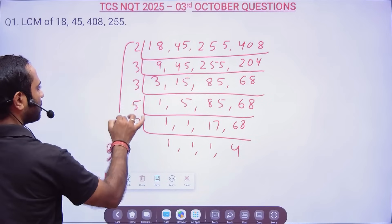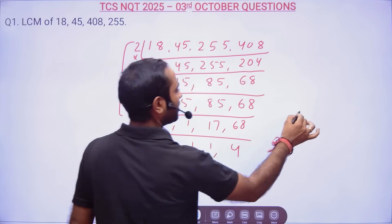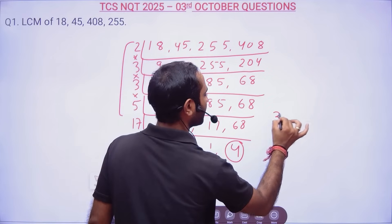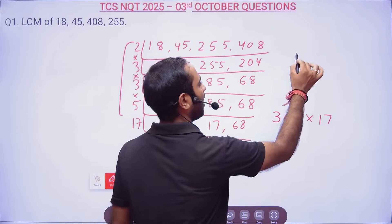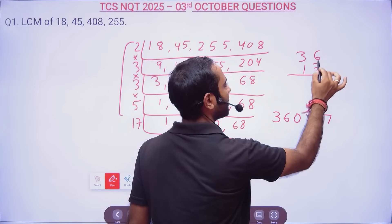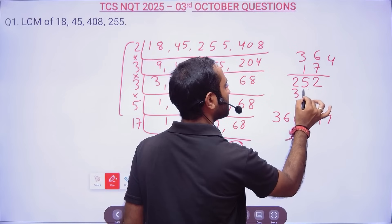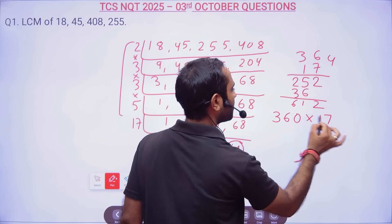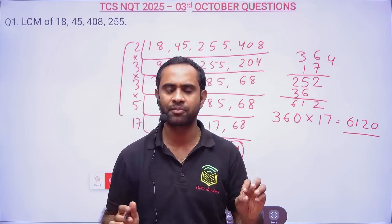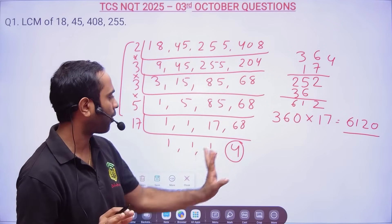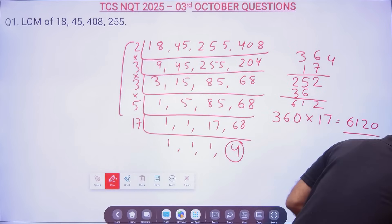So 2 into 3 is 6, 6 into 3 is 18, 18 into 5 is 90, 90 into 4 is 360, and then 360 into 17. That's all you need to solve. So 36 times 17: 7×6=42, carry 4; 7×3=21 plus 4 is 25; giving us 2520 plus 3600 = 6120. So 6120 will be the LCM. This problem will not take more than a minute.